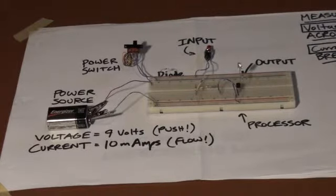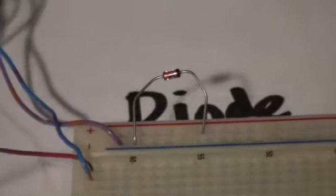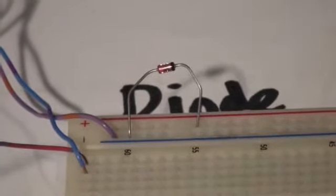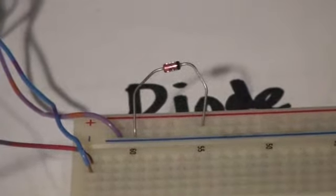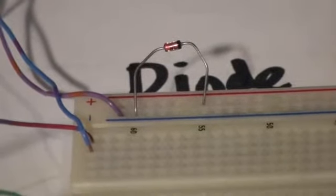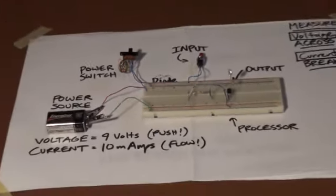The diode is in the circuit to allow the current to flow one way and one way only. If we look at the diode closely, you will see on one side of the diode there is a black band, and that black band indicates the negative side of the diode. That is the power side of the circuit.